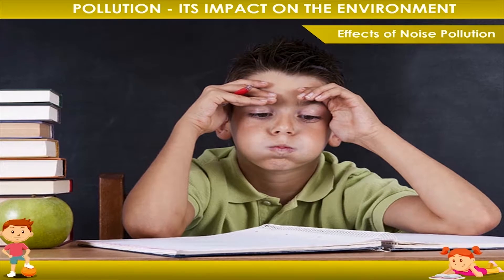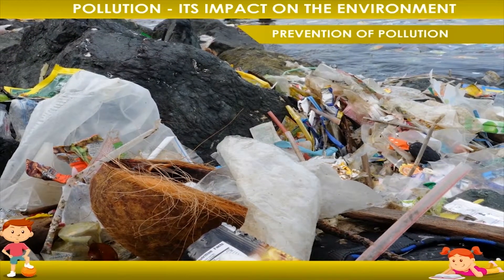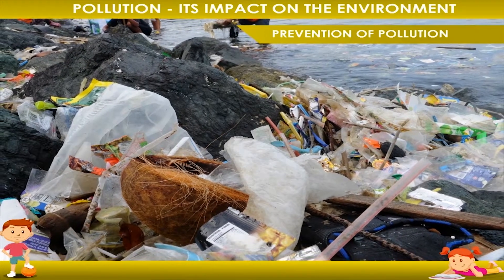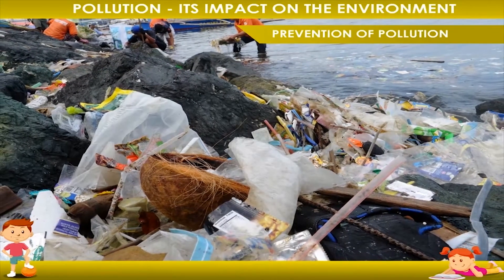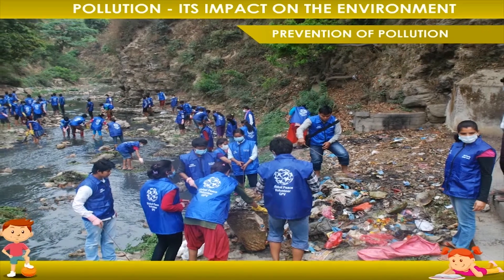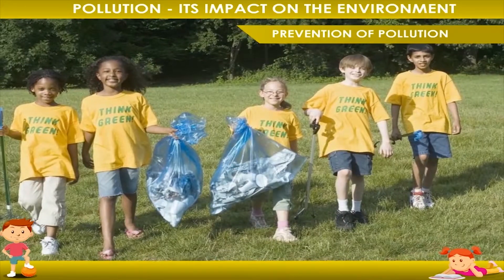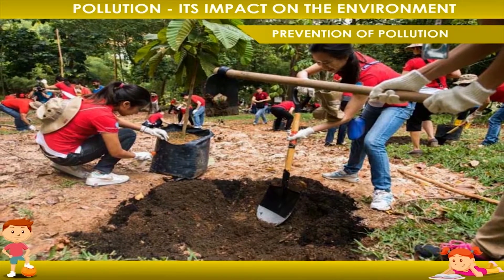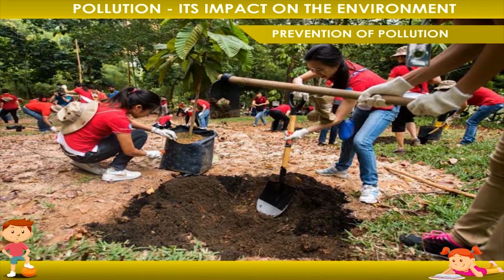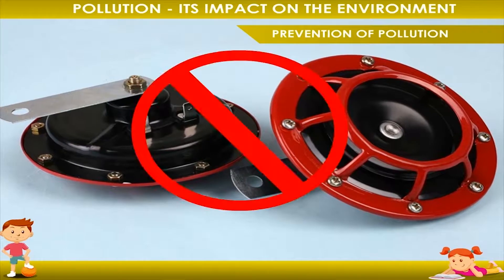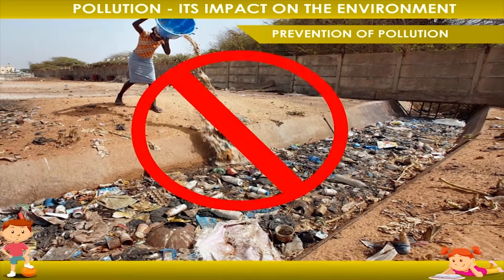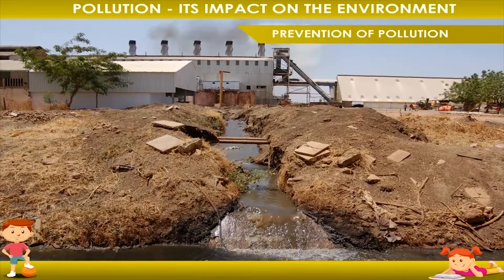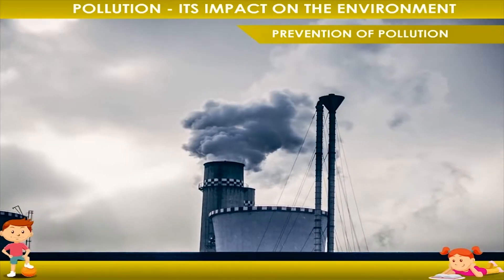Prevention of pollution: If we continuously pollute our environment by throwing garbage and waste, it will be difficult for anyone to live on Earth. We have to do our best to reduce pollution and make our environment healthy and clean. We should plant more and more trees to keep our air fresh and pure. We should avoid loud horns, not throw garbage in the open, and treat dirty water from homes and factories before releasing it into lakes. Filters should be used in chimneys.